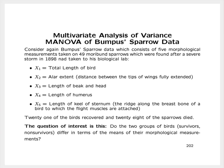Let's look at an example of multivariate analysis of variance. Consider Bumpus' sparrow data, which consists of five morphological measurements taken on 49 moribund sparrows found after a severe storm in 1898 and then taken to his biological lab. There were five response variables, five morphological measurements that were taken and are available.